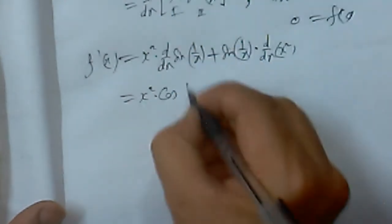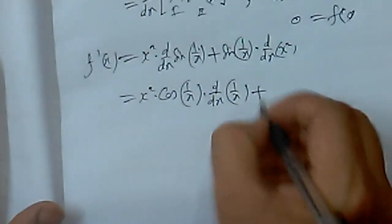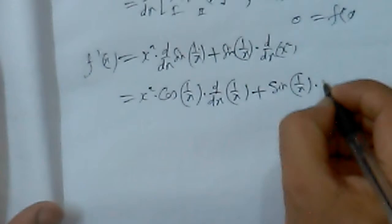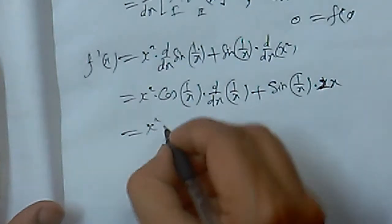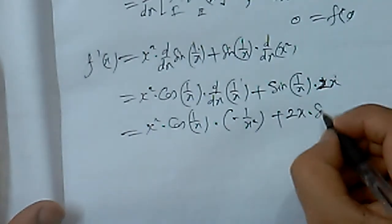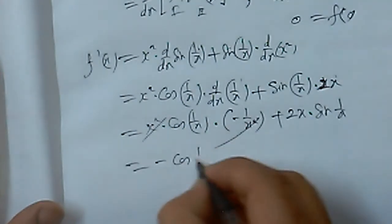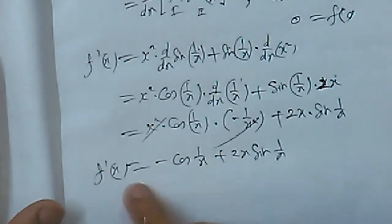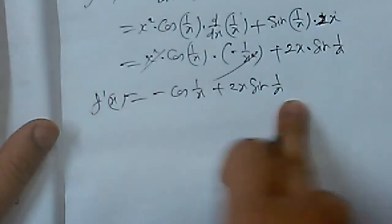Differentiating x²·sin(1/x): the derivative of sin(1/x) is cos(1/x)·(-1/x²), so we get x²·cos(1/x)·(-1/x²) + sin(1/x)·2x. This simplifies to -cos(1/x) + 2x·sin(1/x). So f'(x) = -cos(1/x) + 2x·sin(1/x) for x ≠ 0. We need to show this is not continuous.